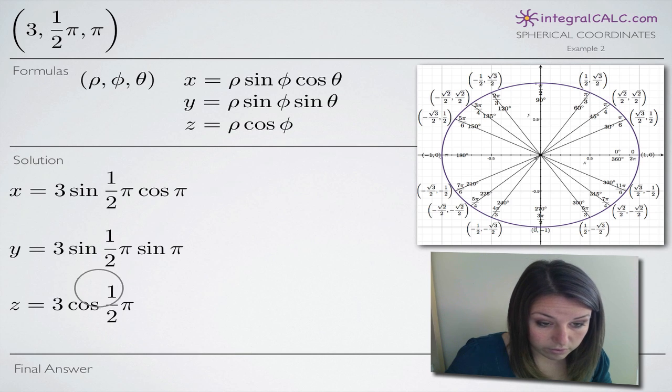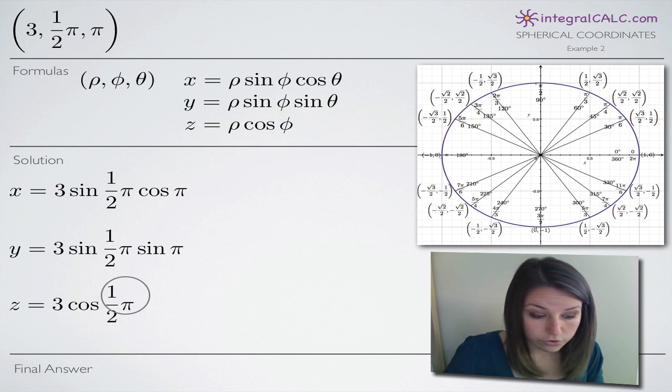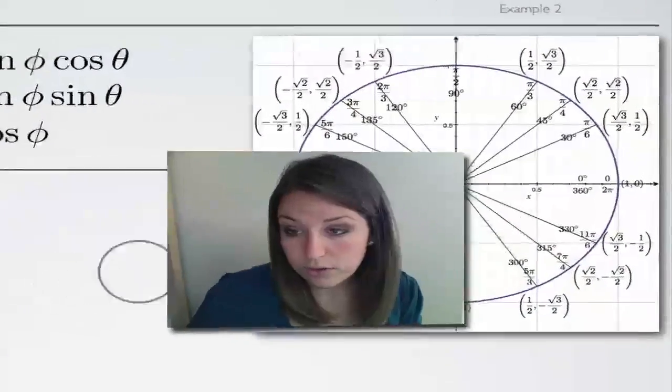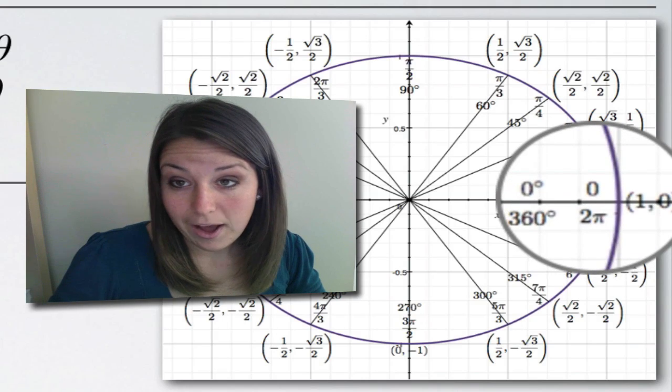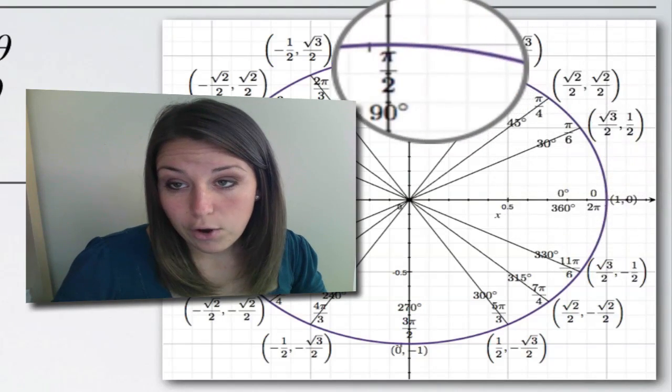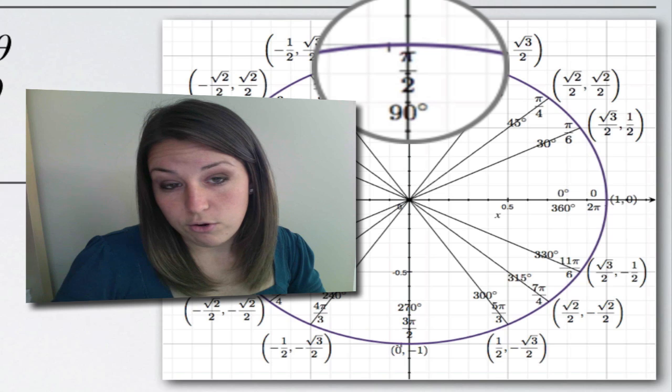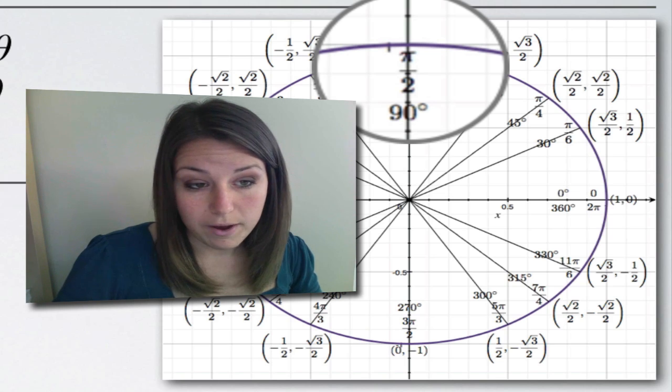We also have cosine of one half pi here. So if we jump over here to our unit circle and we're looking for the angle one half pi, which is the same as pi over 2, we can see that pi over 2 is right here on the unit circle. That's where our angle is equal to pi over 2.